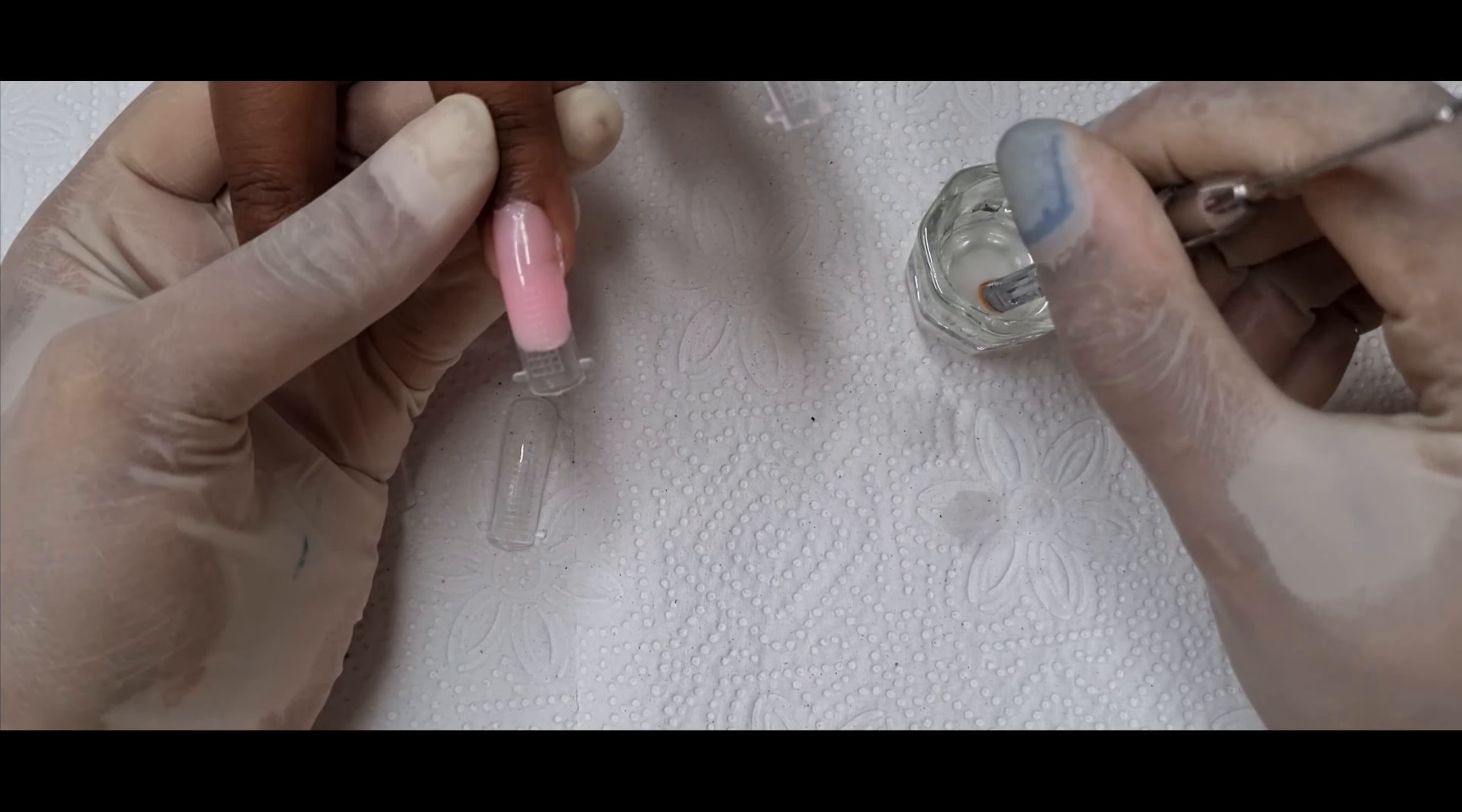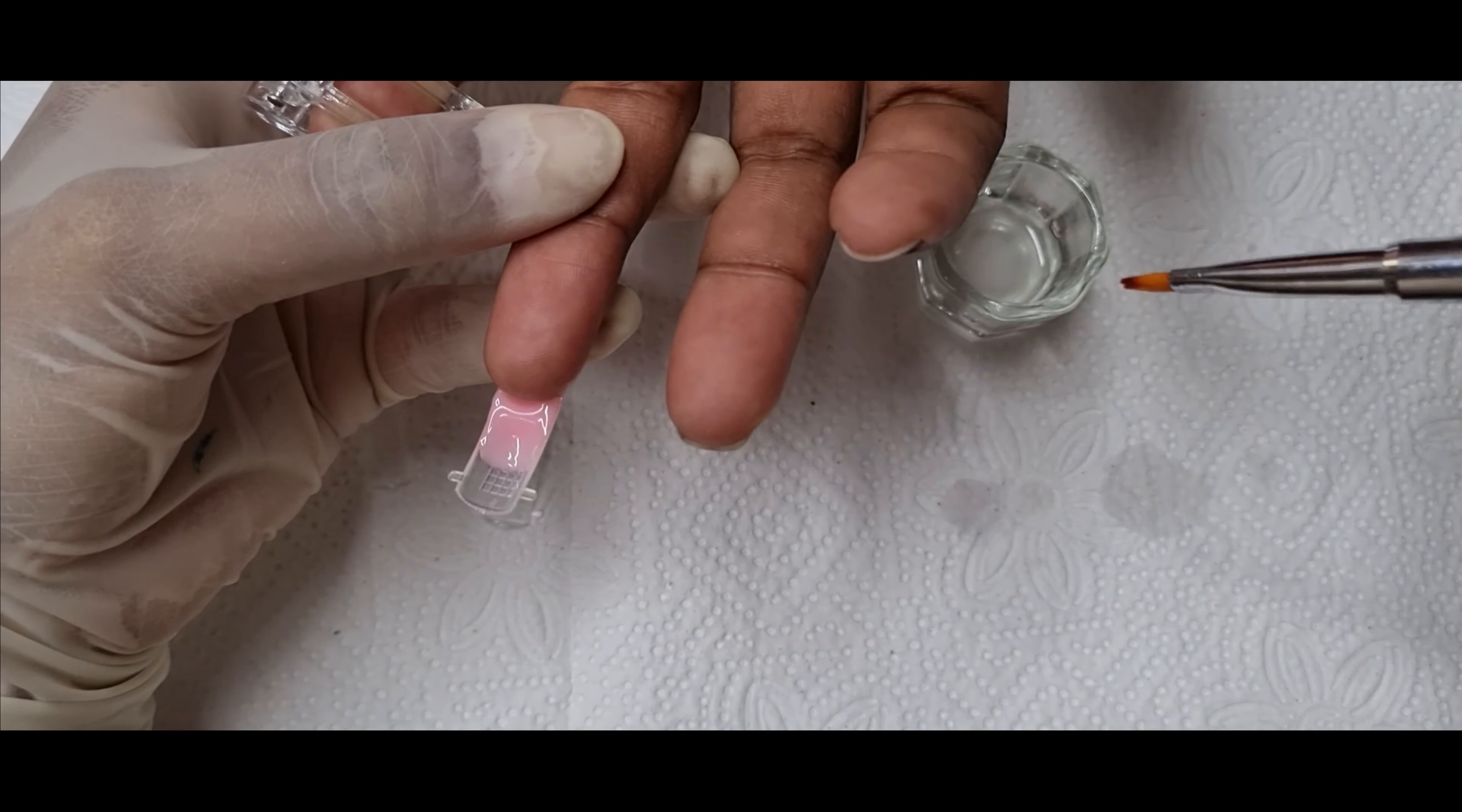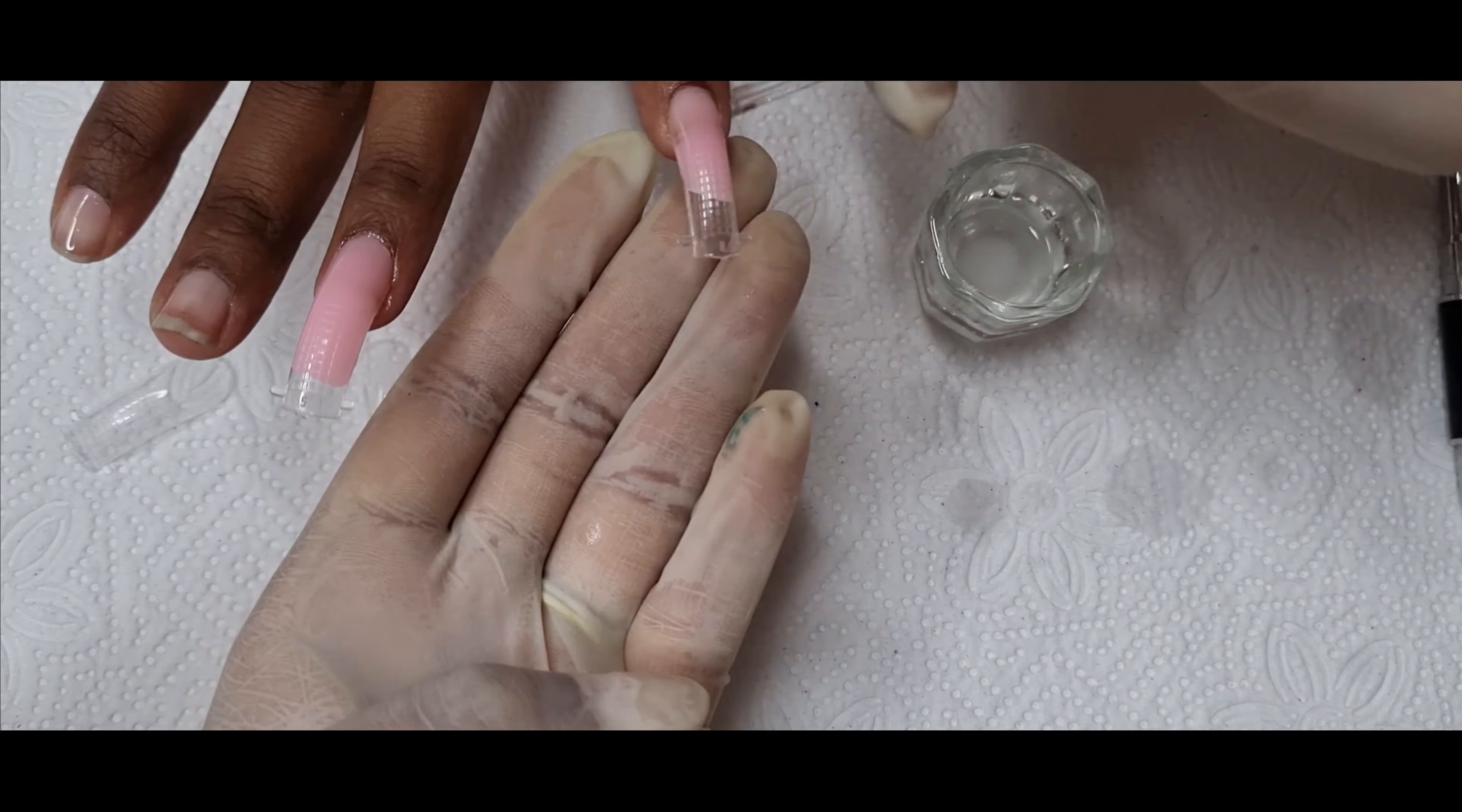So here I'm just laying the poly gel onto the nail and then just gently flipping your hand and brushing the underside of your nail to ensure that you have a smooth finish and that you don't have a glob of poly gel under your nail.